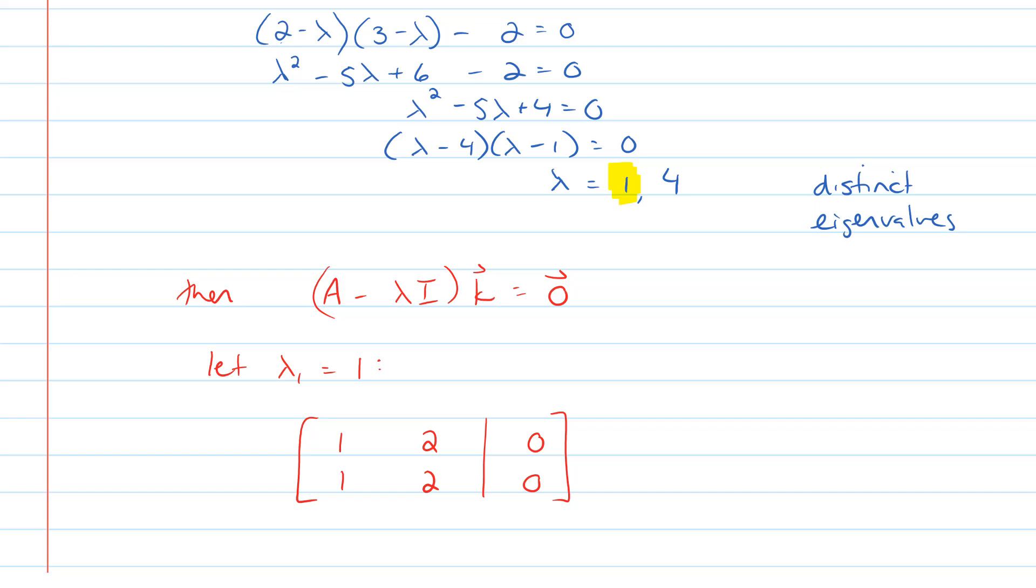Okay, back now. Right, so we're trying to solve for the eigenvectors here, and we put in A minus lambda I onto k is equal to the 0 vector. If we take our resulting matrix here and we row reduce it, you can see that all we have to do is actually subtract the second row from the first row, and we get that the first row, 1, 2, 0 remains the same, and the second row becomes identically 0.